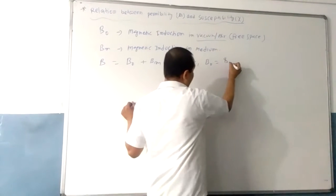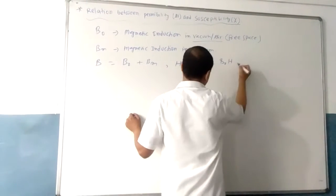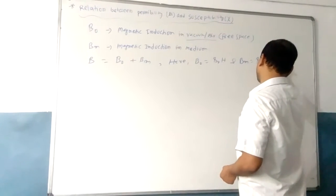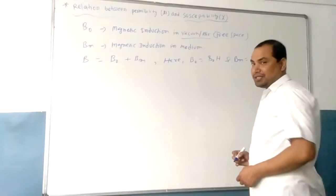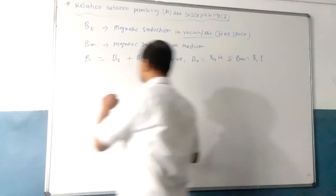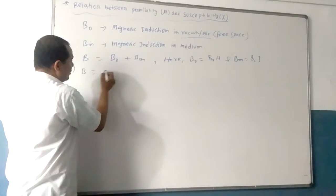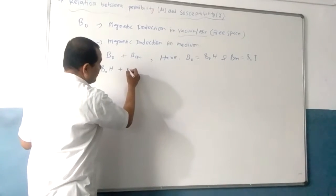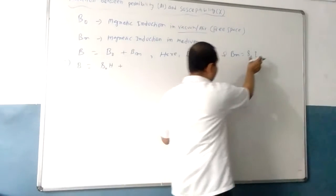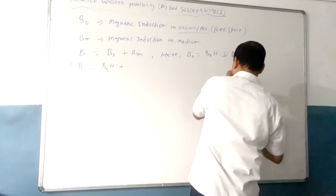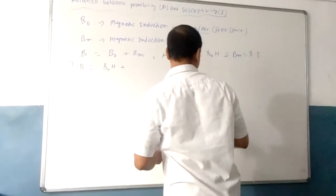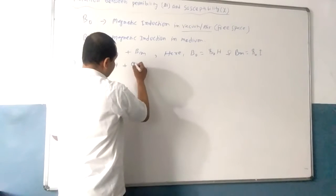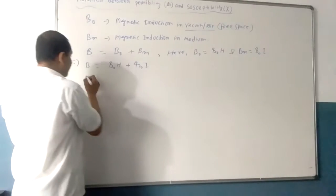Here, B0 is equal to μ0·H, and Bm is equal to μ0·I, where I is the intensity of magnetization. So B is equal to μ0·H plus μ0·I.